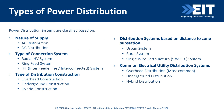Moving on to construction types: we can have overhead construction, underground construction, and hybrid construction. Hybrid means a combination of overhead and underground together. Nowadays, underground distribution is becoming more popular because of aesthetics and less maintenance, but overhead is still preferred from a cost point of view.